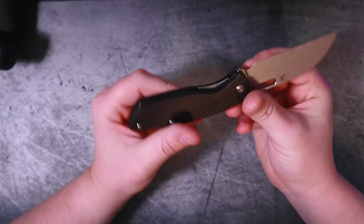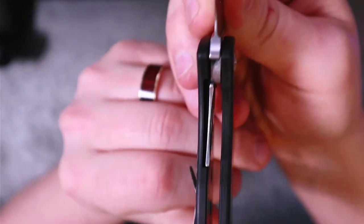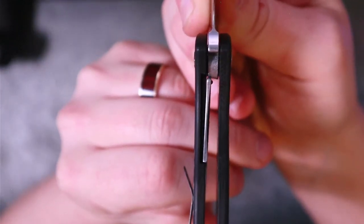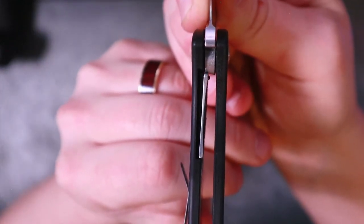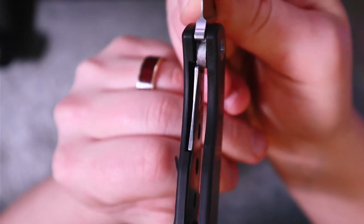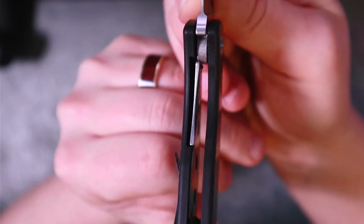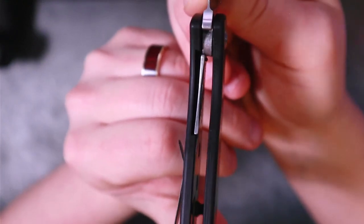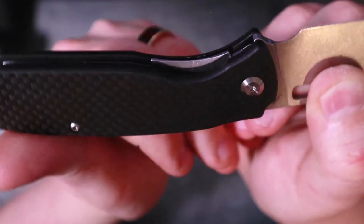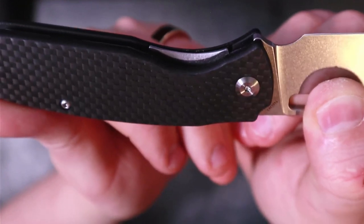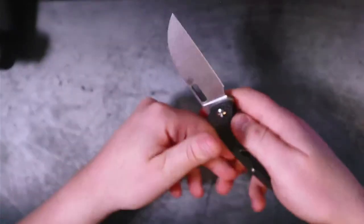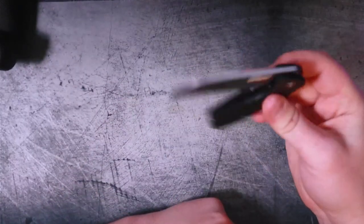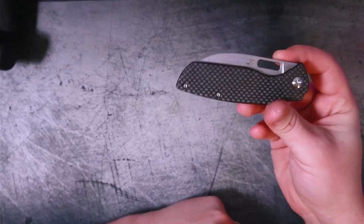I think that whether you pay $80 for the one that's just regular G10 or $95 for this one with peel ply carbon fiber, I think you're going to enjoy it. Let's talk about the lock real quick. So again, this is a liner lock, and you'll notice right here that we're sitting right there at about 25% on the lockup. You can also notice that detent ball. The detent ball is tall, so if you want to know where the action comes from, there it is.